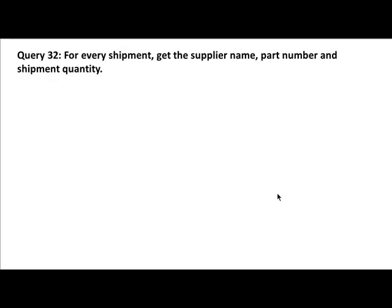With this next query, we are entering into a different kind of territory. For every shipment, get the supplier name, part number, and shipment quantity. Look at the query carefully — the shipments table has supplier number, part number, project number, and quantity. But we are asking for supplier name, not supplier number. Part number and quantity come from the shipments table, but the supplier name has to come from the suppliers table. So for the first time, we are looking at a query that needs to use two tables.